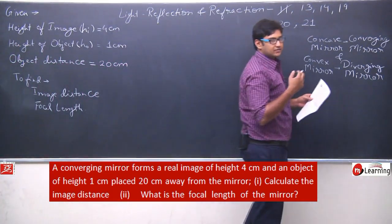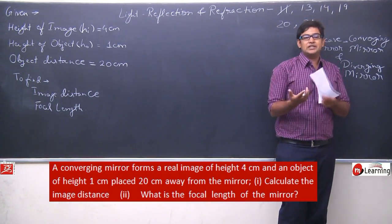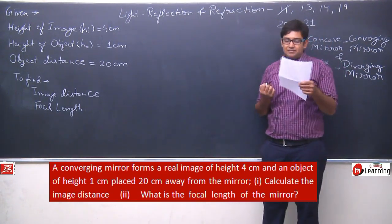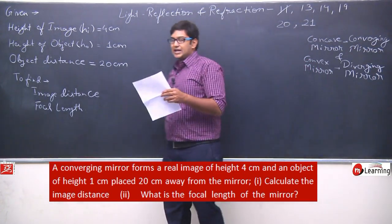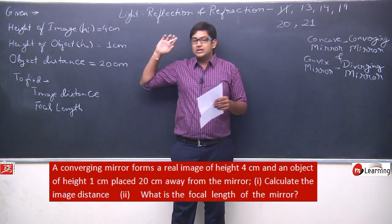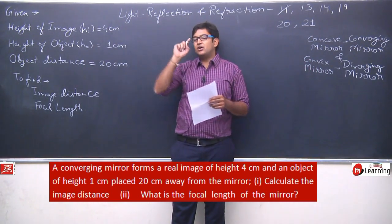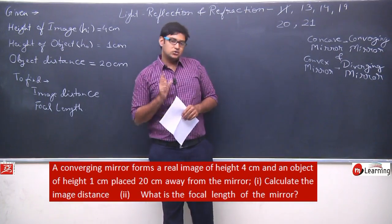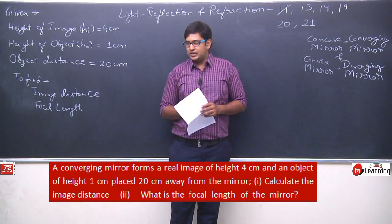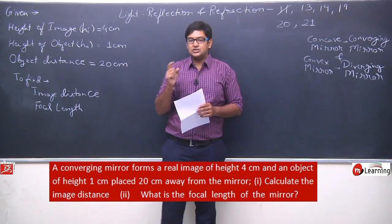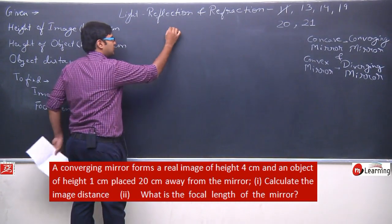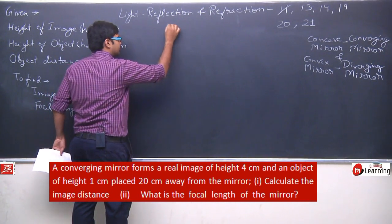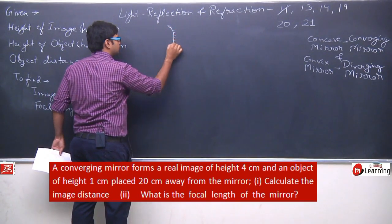Now you might be wondering about sign convention — how can we solve this without it? We will now discuss sign convention. We can see that image size, object size, and the nature of the image are given. The image is a real image. Now it is a concave mirror, so let us draw a concave mirror first, and then we can draw our conclusions.